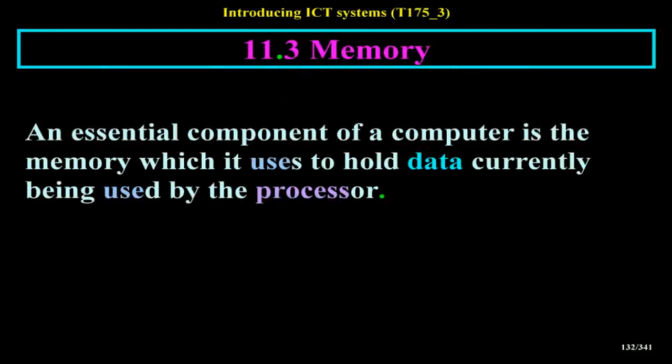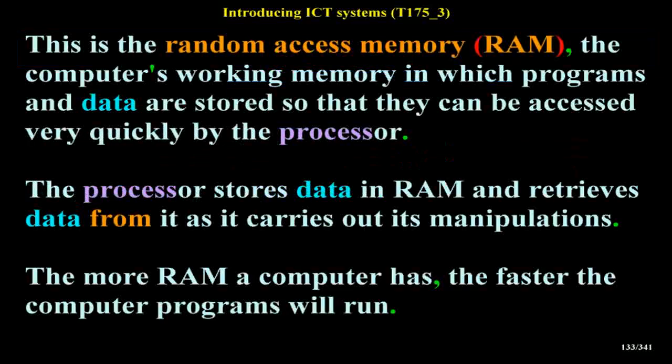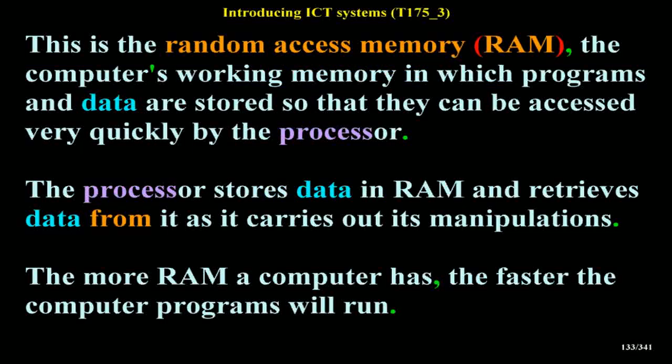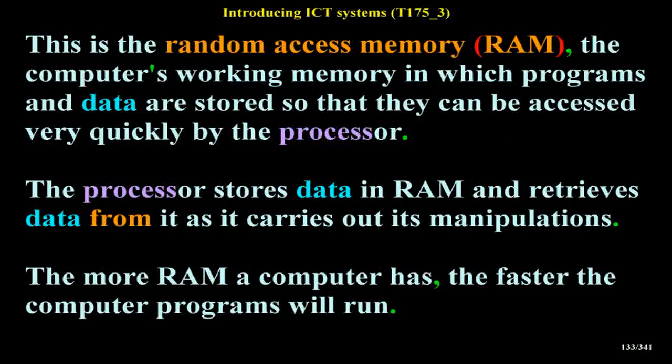An essential component of a computer is the memory which it uses to hold data currently being used by the processor. This is the random access memory (RAM), the computer's working memory, in which programs and data are stored so that they can be accessed very quickly by the processor. The processor stores data in RAM and retrieves data from it as it carries out its manipulations. The more RAM a computer has, the faster the computer programs will run.